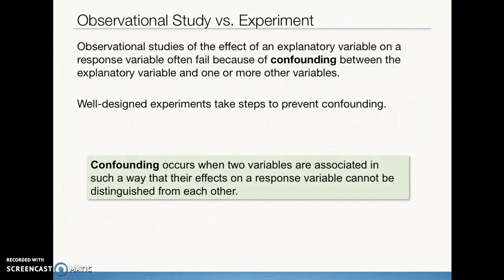Sometimes confounding can occur between our explanatory variable and other variables, meaning we cannot distinguish the effect of our explanatory variable from the effect of some other variables that have an impact on our response variable. We call that confounding, and it's the reason we really want to run controlled experiments so that the treatment group and the control group are as similar as possible, with the only difference being the treatment. Once we've isolated all other factors except the treatment, we can establish that causation relationship.